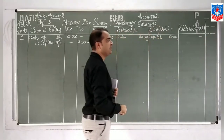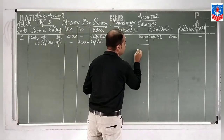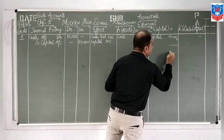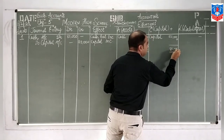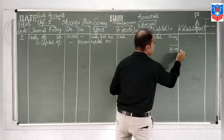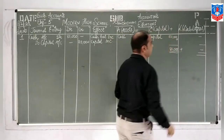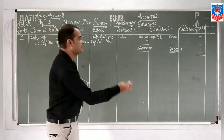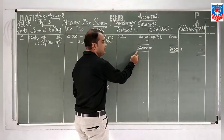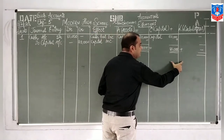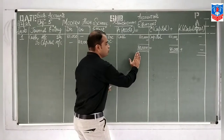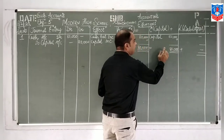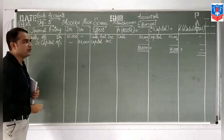Liabilities are nil so far. At the end we will total up: 80,000 equals capital 80,000 plus liabilities nil. Like this way your equation is balanced. Assets are 80,000, and capital plus liabilities combined is also 80,000. So 80,000 equals capital plus liabilities — liabilities are nil, full capital is 80,000.